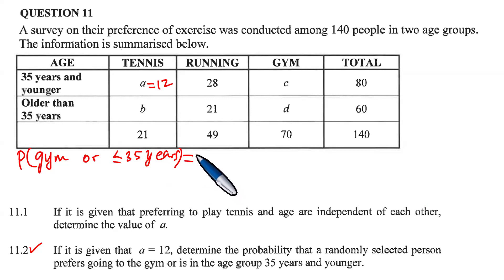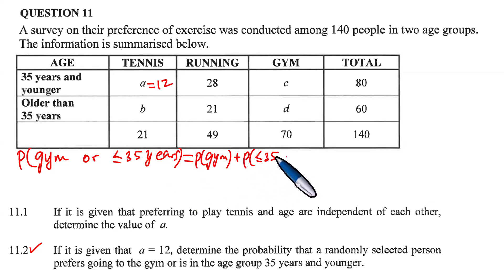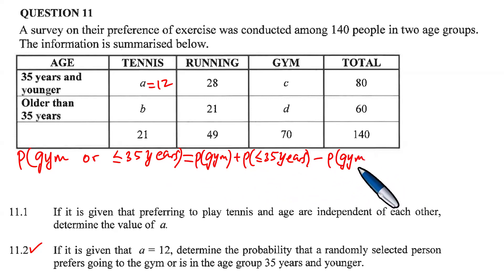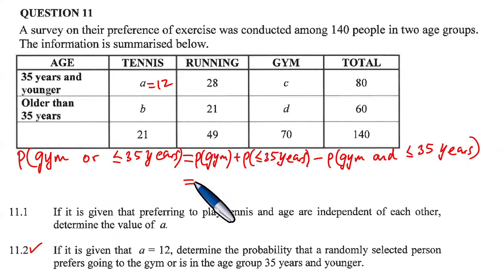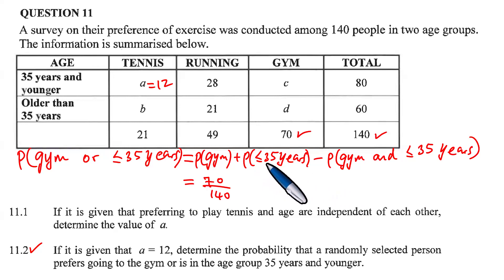We apply the addition rule: P(Gym OR ≤35 years) = P(Gym) + P(≤35 years) − P(Gym AND ≤35 years). The probability of gym: the gym row has a total of 70, so P(Gym) = 70/140. The probability of ≤35 years: that age group totals 80, so P(≤35 years) = 80/140.